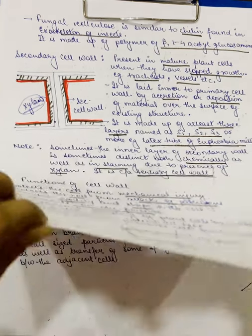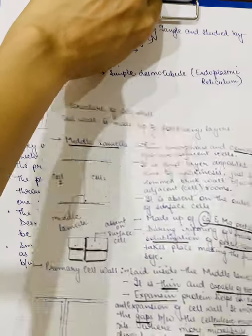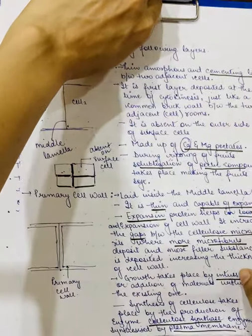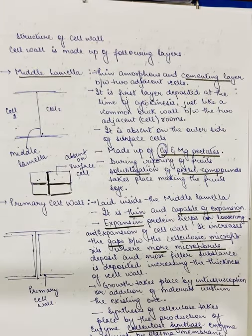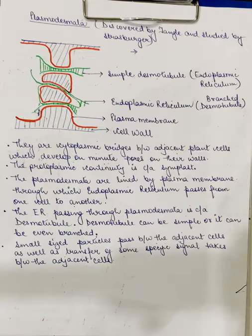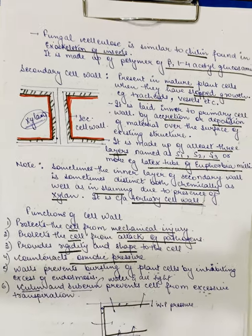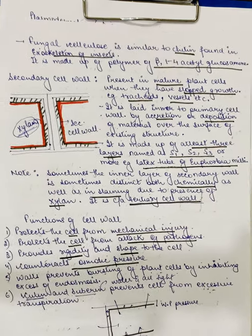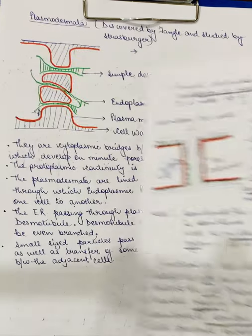This was all about the cell wall. We studied about the plant cell wall, the different types of cell wall, and the layers: middle lamella, then the primary cell wall, then the secondary cell wall laid inside the primary cell wall, and sometimes the tertiary cell wall visible due to different staining properties.